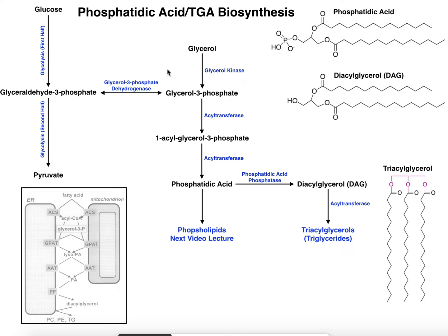Regardless of where we get the fatty acids — whether from de novo biosynthesis, from the diet, or liberated from adipose tissue — we have to have a way to build more complex lipids. The two we're going to look at in the next few videos are phospholipids, the simplest of which is called phosphatidic acid or phosphatidate, and triacylglycerols, also called triglycerides — the same thing they measure when you go to the doctor.